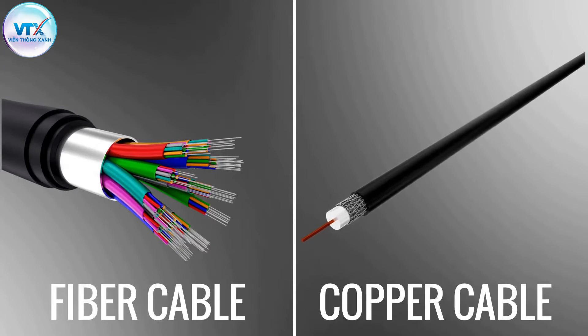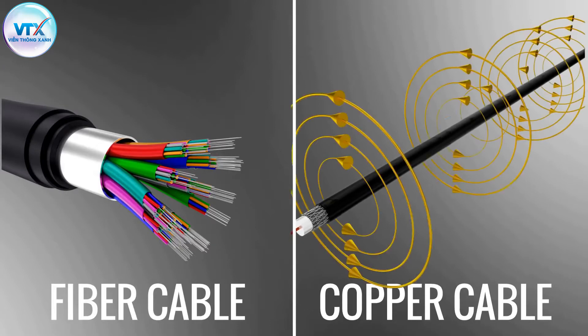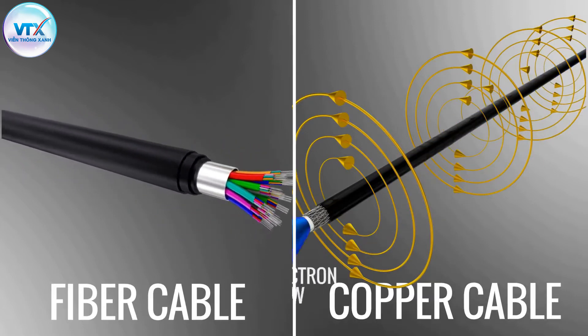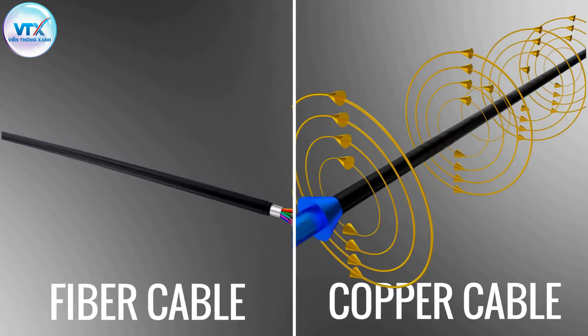The flow of electrons in a copper cable generates a magnetic field even outside of the cable that can cause electromagnetic interference. On the other hand, the light which travels through the optical cable is always confined within the fiber. Thus, the chance of interaction with an external signal does not exist.